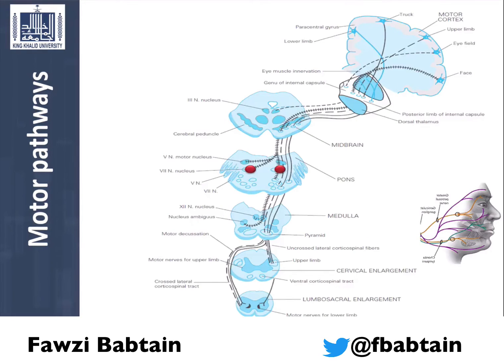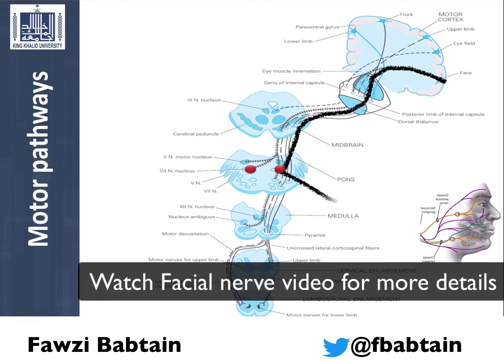Cortical facial nerve fibers will descend down to the pons and to the facial nucleus, where the peripheral facial nerve will then exit the skull to supply the muscles of facial expression.